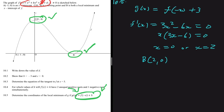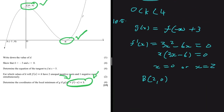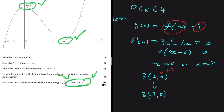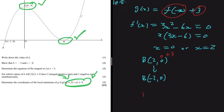Applying the transformation g(x) = f(-x) + 3: the -x reflects the graph, so x = 2 becomes x = -2. The +3 shifts the graph 3 units up, so y = 0 becomes y = 3. Therefore, the coordinates of the local minimum of g are (-2, 3).